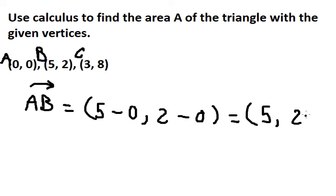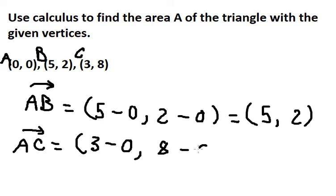The next one, we need to find vector AC. So we have number 3 minus number 0, number 8 minus number 0, and we have number 3 and number 8. The question: we need to find the area of this triangle.